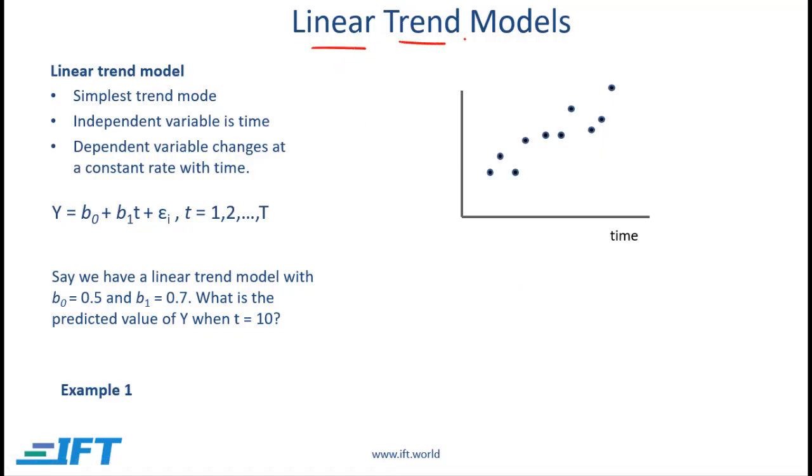Let's start with linear trend models. A linear trend model is the simplest possible trend model. Here the independent variable is time and the dependent variable changes at a constant rate with time. So let's say that we have a particular variable y and these are values of y.